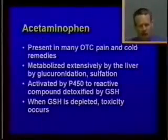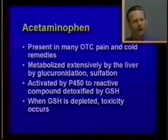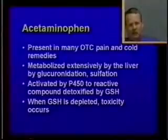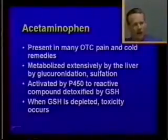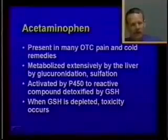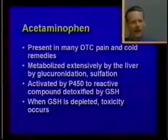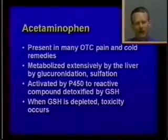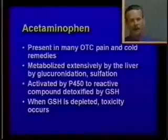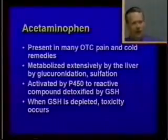Another common poison, especially among cats, is acetaminophen — the compound present in many over-the-counter pain and cold remedies like Tylenol. Acetaminophen is metabolized extensively by the liver; the parent compound is glucuronidated and sulfated to non-toxic metabolites. Cats are deficient in glucuronidation and are therefore much more susceptible to the toxic effects. Once glucuronidation and sulfation capacity is exceeded, the liver uses P450 enzymes to metabolize acetaminophen to more reactive compounds, which must be bound by glutathione for detoxification.